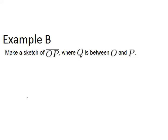Well, let's start by making a sketch of segment OP. And because of this symbol on top, it means it's a segment, so it ends at either end, and that would be where the O and the P come in, it's labeled OP.